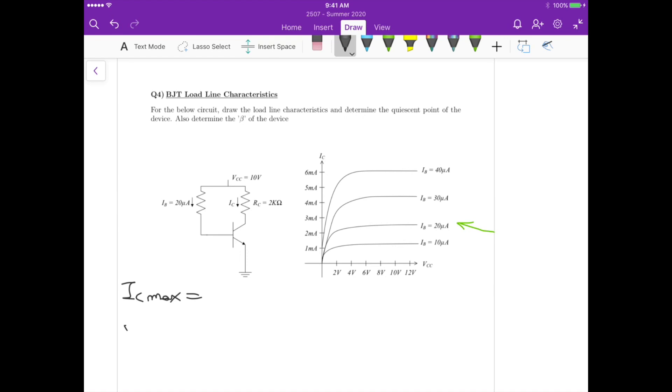How do we determine IC max? For the maximum value of current, we know that the voltage at the collector should be zero. In this case, we have VCC fully applied across RC, which means that we have 10 volts divided by 2k ohms, and that's 5 milliamperes.